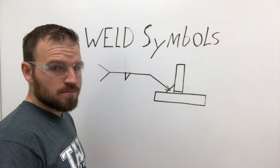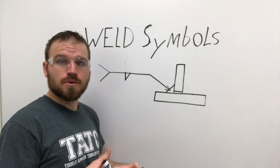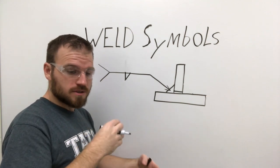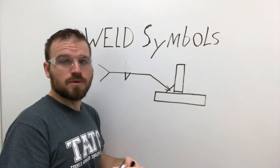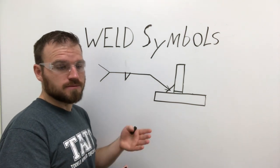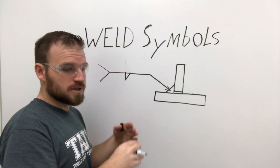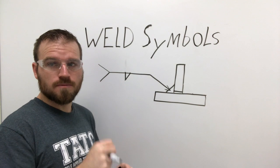This is also one of the most confusing things for me when I was out looking at blueprints. I had a hard time distinguishing whether it was on the arrow side or the other side. It also gets difficult when you start getting into the V-grooves, because sometimes you're going to do a back gouge or something like that, and you need to be able to distinguish which one is the arrow side and which one is the other side.